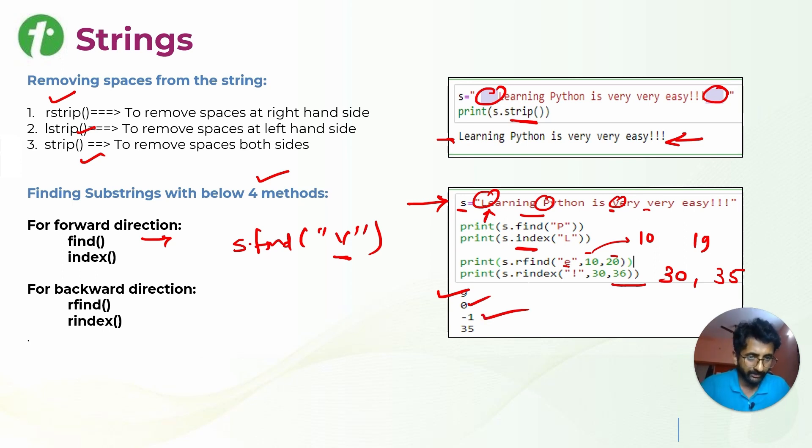Whenever it is rfind, it is reverse direction, backward direction. If it is only find, it will check in forward direction. So whenever you are doing rfind E in 10 to 20, it will check from reverse direction. Similarly for rindex, reverse direction 36 to 30, it will check and tell it is at 35th position.